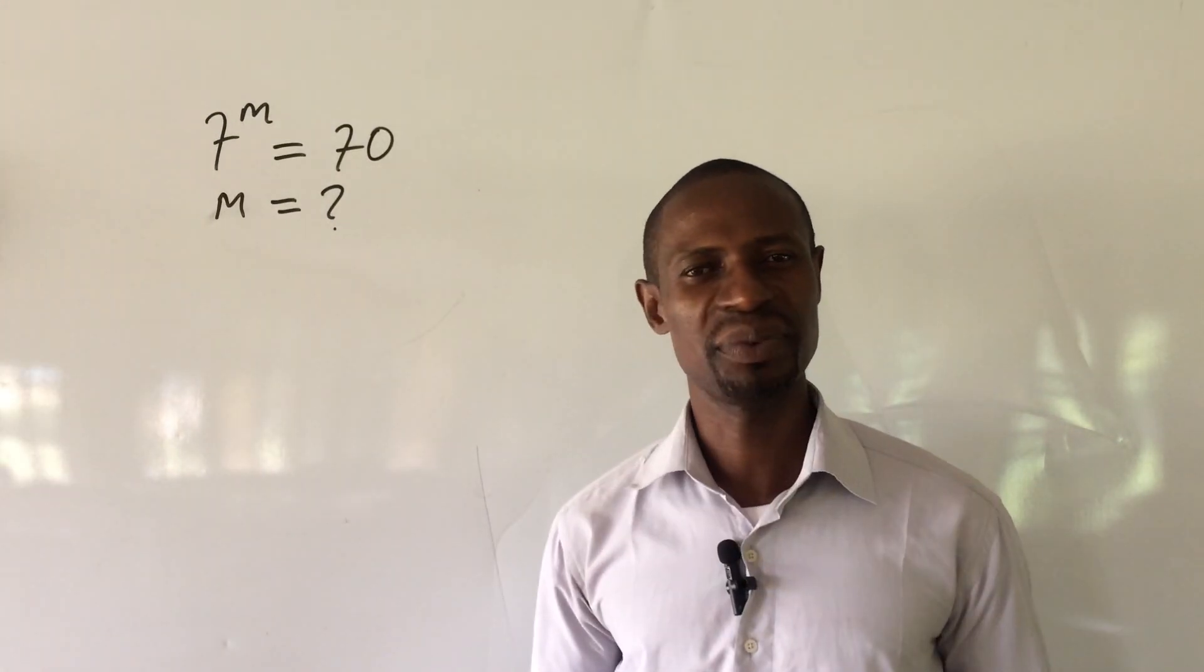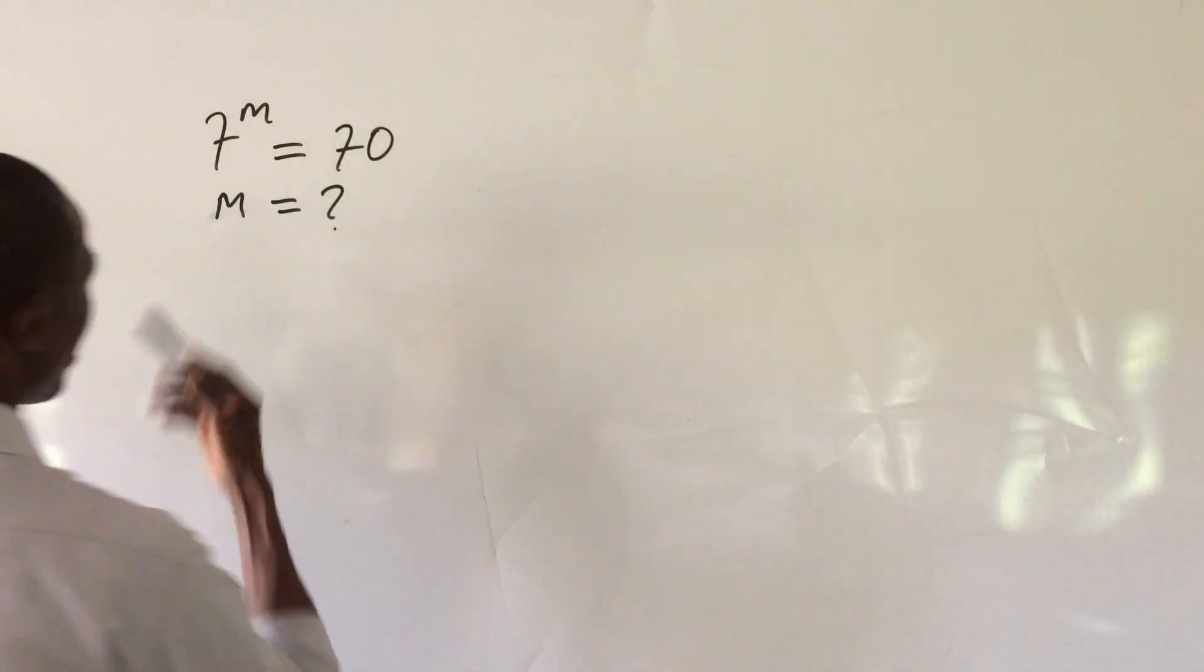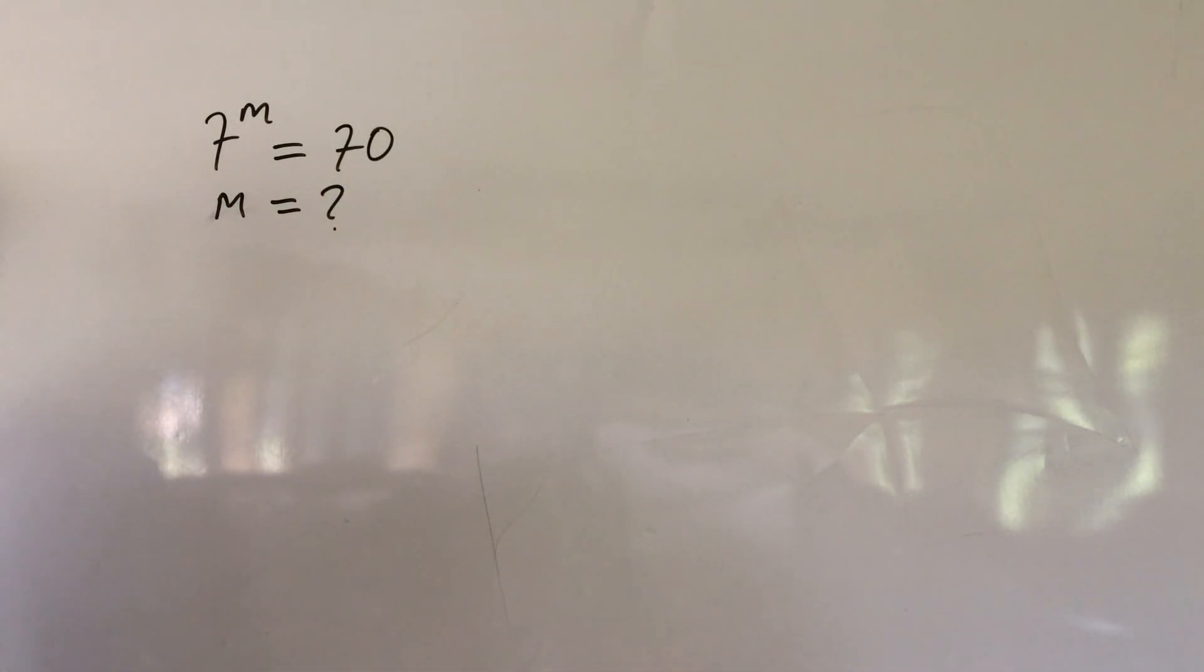Welcome! Here we have a very simple exponential equation. How do we solve this? We have 7 to the power of m equal to 70. What would be the value of m?